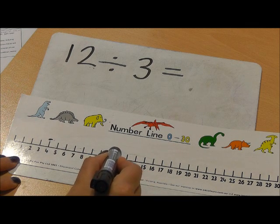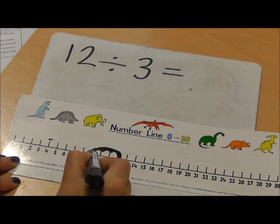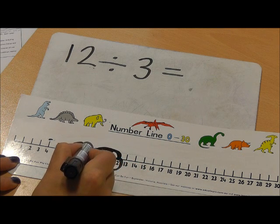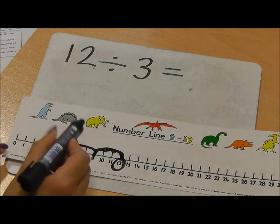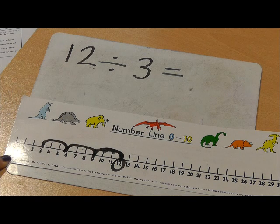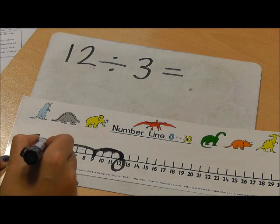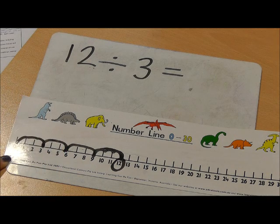1, 2, 3. One jump of 3. 1, 2, 3. Two jumps of 3. 1, 2, 3. Three jumps of 3. 1, 2, 3. And another jump of 3.